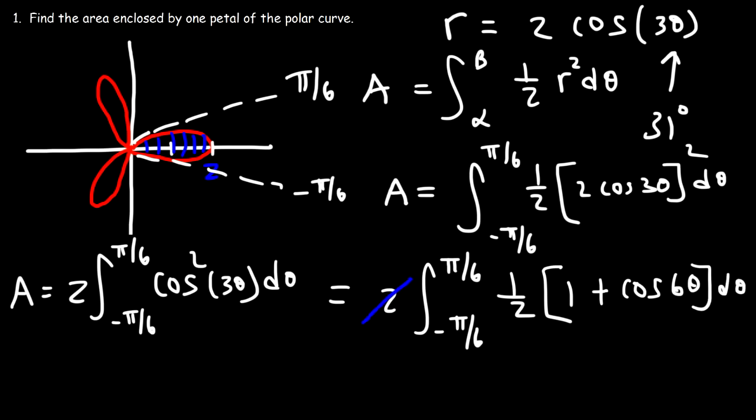Moving the one-half to the front, we now have one-half times the integral of (4 sine squared + 4 sine theta + 1) d theta. Using the power-reducing formula, sine squared equals one-half times (1 minus cosine 2 theta). So 4 times one-half is 2, and distributing the 2 to (1 minus cosine 2 theta) gives 2 minus 2 cosine 2 theta plus 4 sine theta plus 1. Combining 2 plus 1 gives 3. The antiderivative of 3 is 3 theta, the antiderivative of cosine 2 theta is sine 2 theta over 2, and the antiderivative of sine is negative cosine. All evaluated from 7 pi over 6 to 11 pi over 6, with a one-half out front.